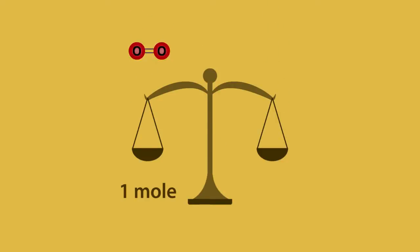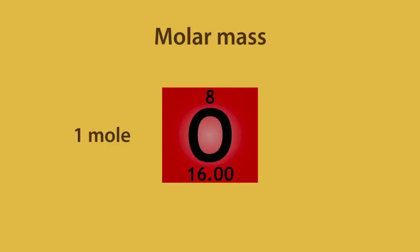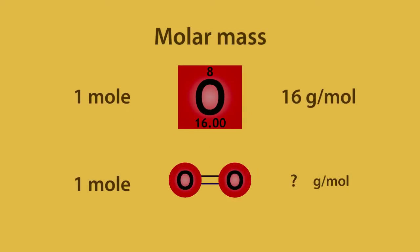The mass of 1 mole of oxygen molecules, O2, can be found using the periodic table. This is called the molar mass. If 1 mole of oxygen atoms have an atomic mass of 16 grams per mole, what's the mass of 1 mole of oxygen molecules? Pause and continue when ready.